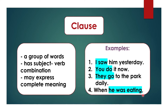'When he was eating,' — here you can see a comma given, so we understand it is not giving us a complete meaning. This is called a dependent clause because it is working as part of another sentence. But we are getting a group of words and a subject-verb combination: 'he' is the subject, 'was' is the auxiliary verb, and 'eating' is the -ing form of the main verb 'eat.' So considering all four examples, these are all clauses — group of words with subject-verb combination, sometimes expressing meaning.